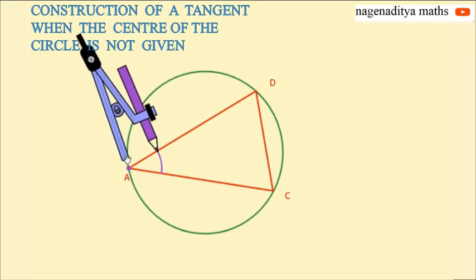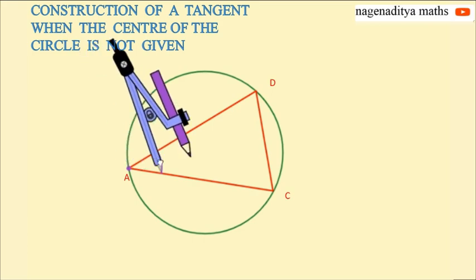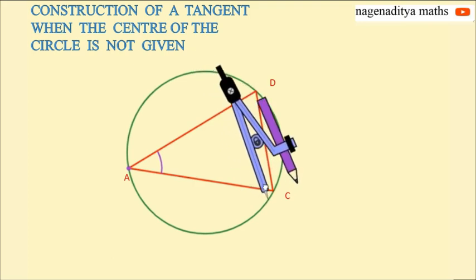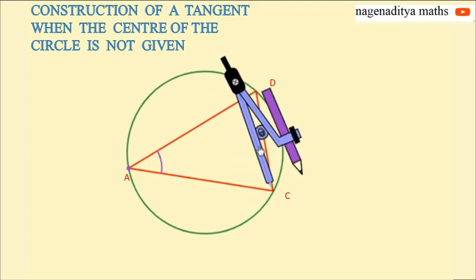Now move the compass to the point C and draw an arc on chord C with the same radius like this.